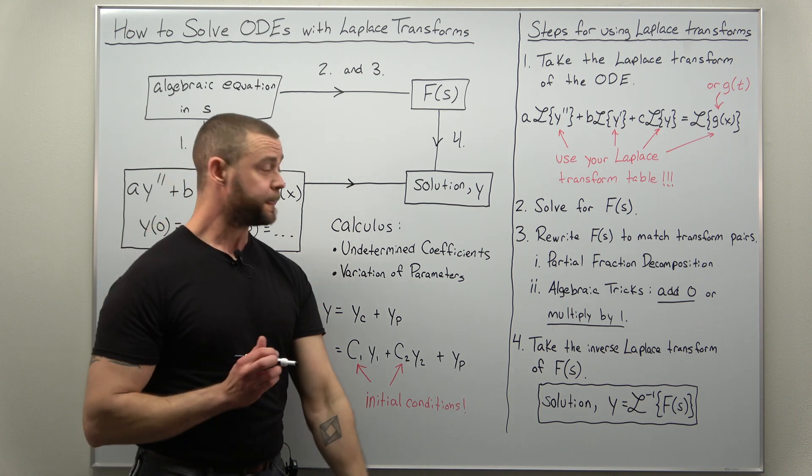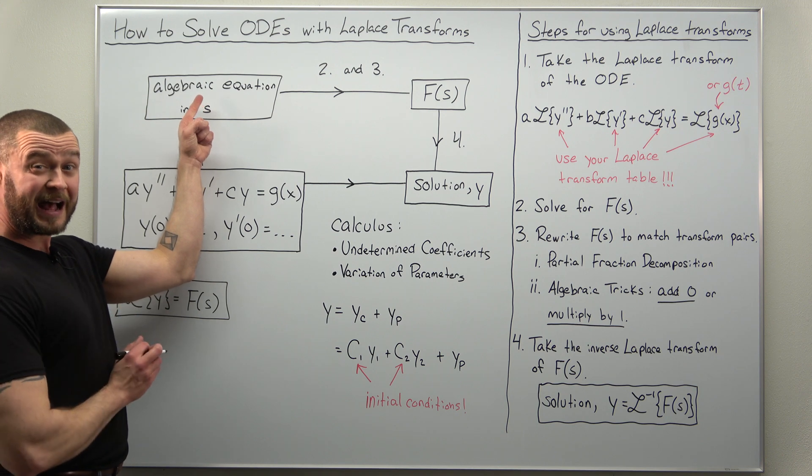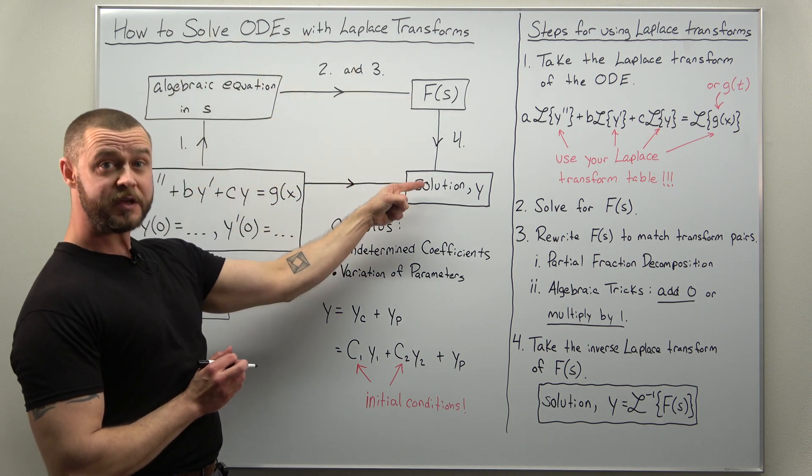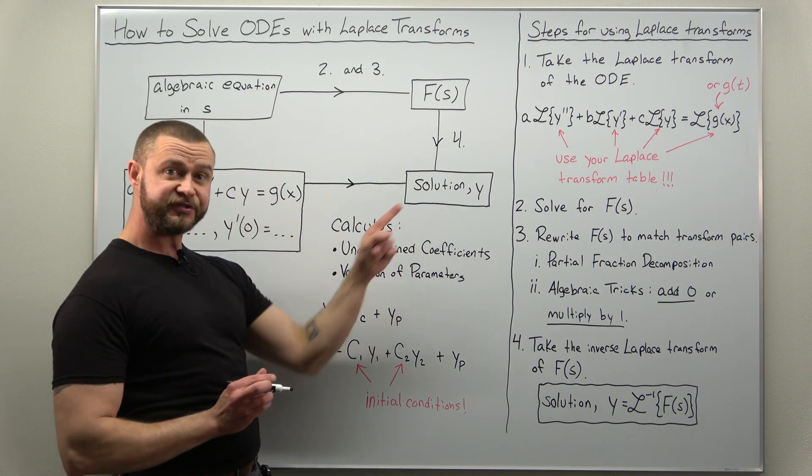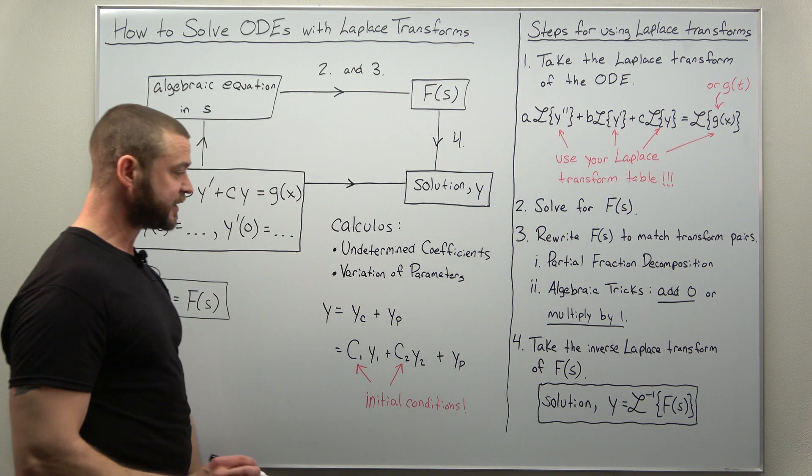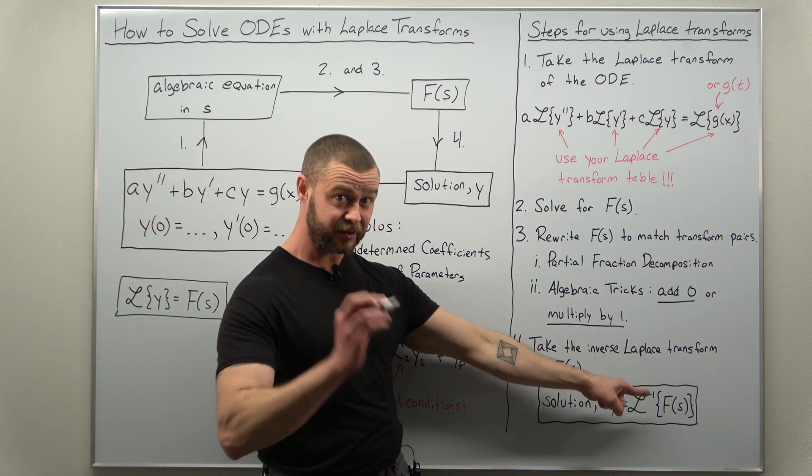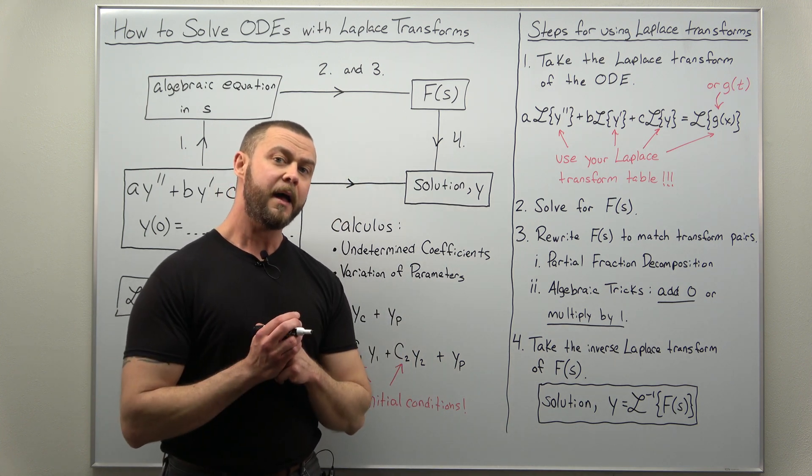And that's it. So we start with the differential equation, transform it to an algebraic equation, rewrite, and then do the inverse transformation. And we get to the same place, we get to our solution y, and that's what we're writing down here as y as the inverse Laplace transform of F of s. And that's it.